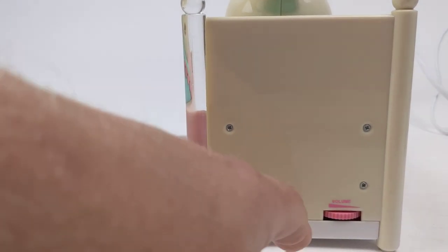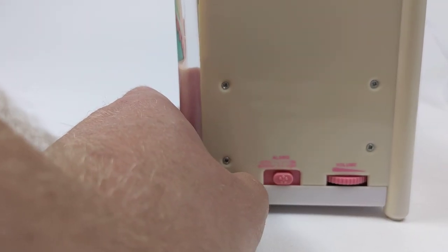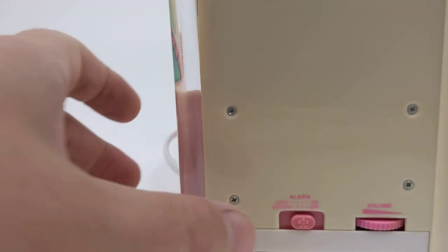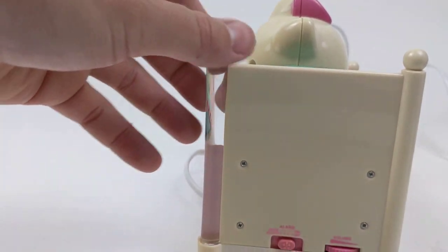This is the other side, so this is where you would set the alarm. Here's the volume, so you can have the alarm on, off, buzzer.